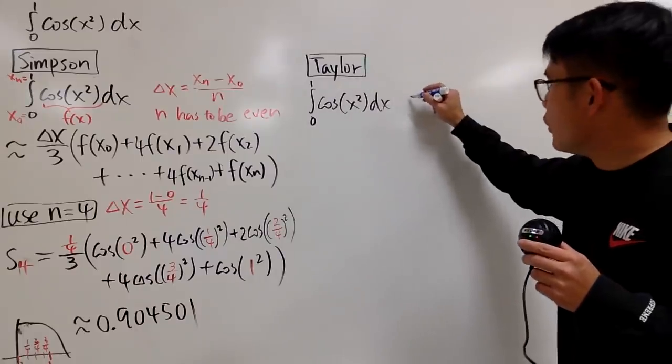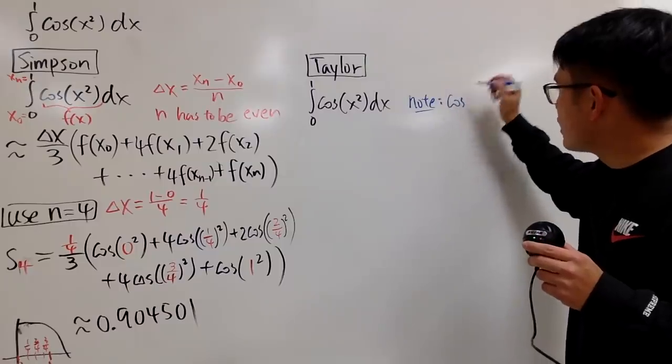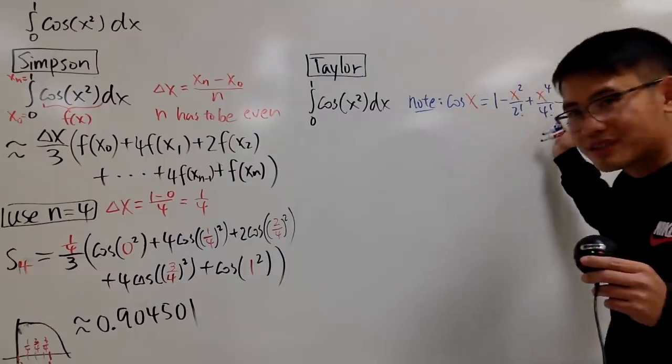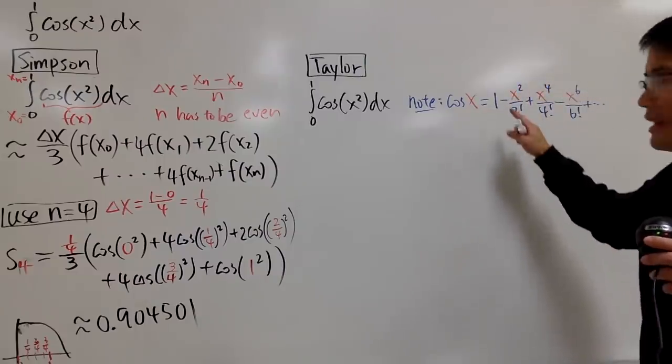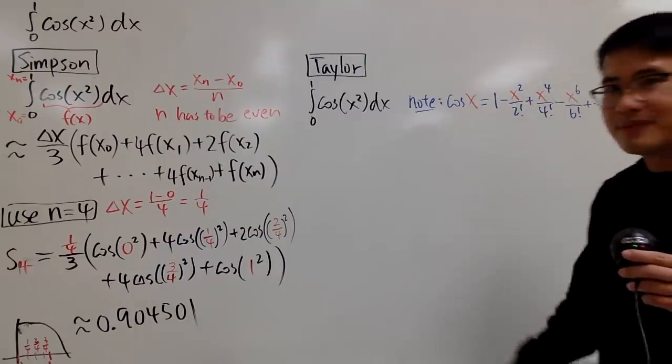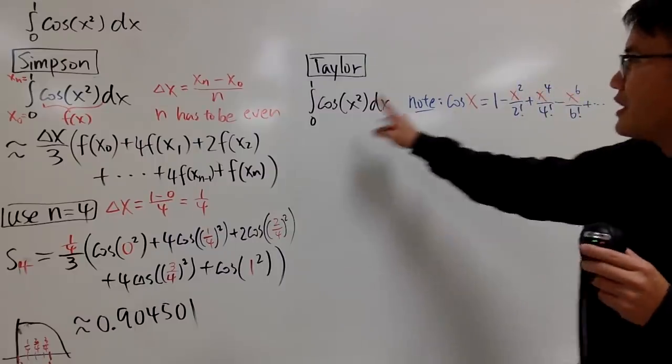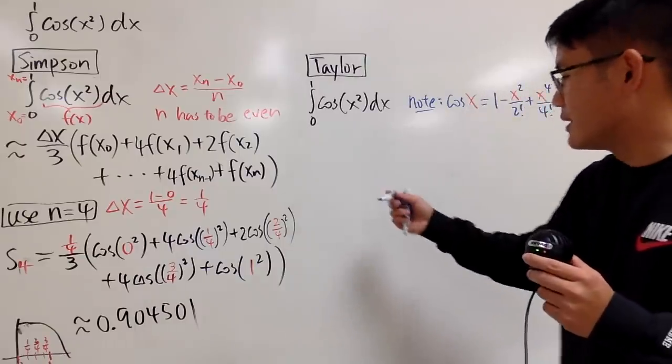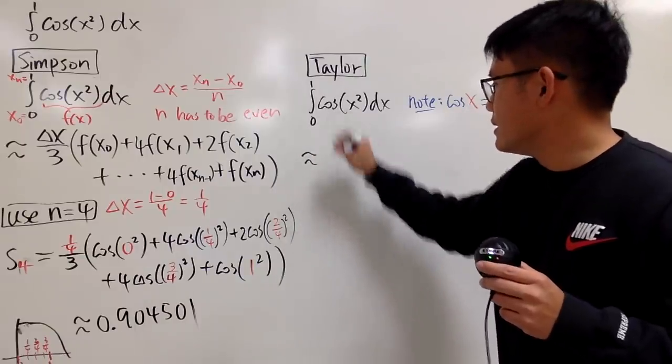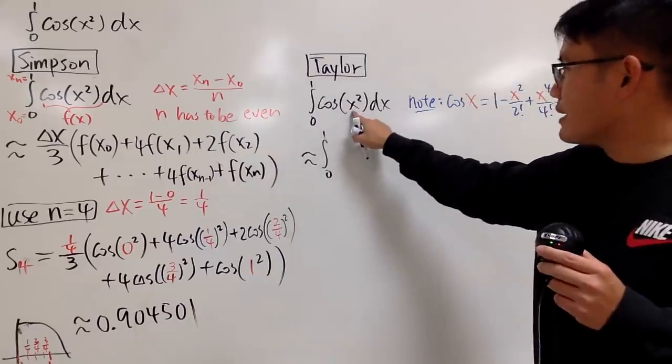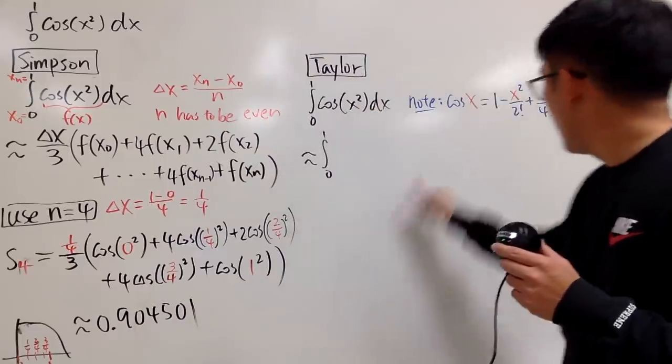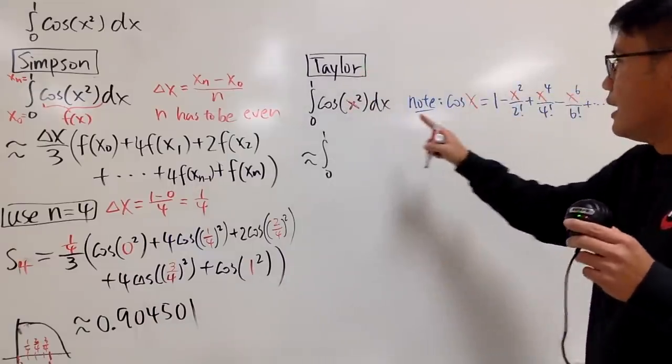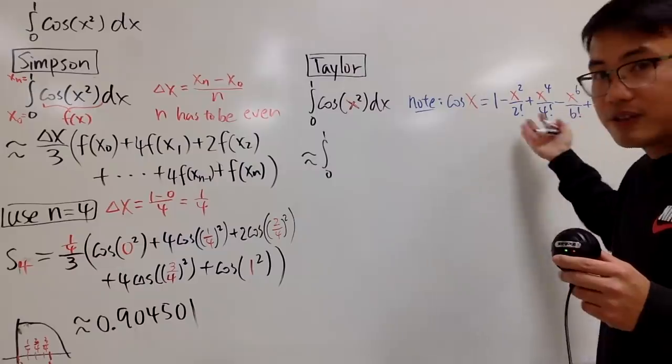We have to know that cosine of just x gives us, notice you have the even powers and also the even factorials, and this alternates. So this is how you can remember cosine x. Here we have cosine x squared. So what we will do is, this is the integral from 0 to 1, I will plug in x squared into all the x. Let me write this down for you. As I said, I will use the first four non-zero terms.